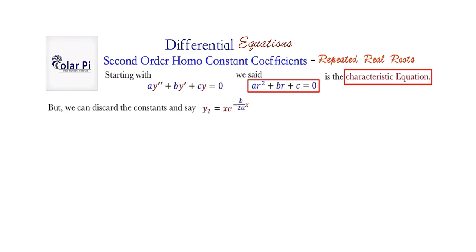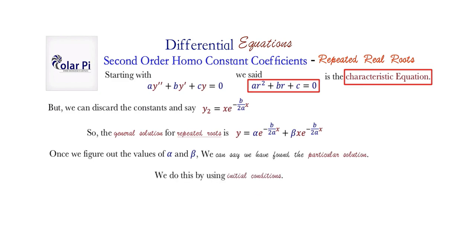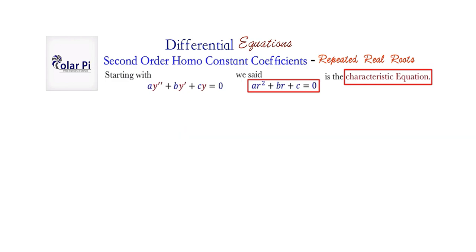We can discard the constants as I said, and write y2 as that. So the general solution for repeated roots is always going to be this, where again we pulled a and b from this guy here, the characteristic quadratic. And so, of course, given some initial conditions, we can figure out alpha and beta and therefore get to the particular solution. We get to the particular solution through initial conditions, which you are abundantly aware of at this point. So perhaps we conclude with an example.